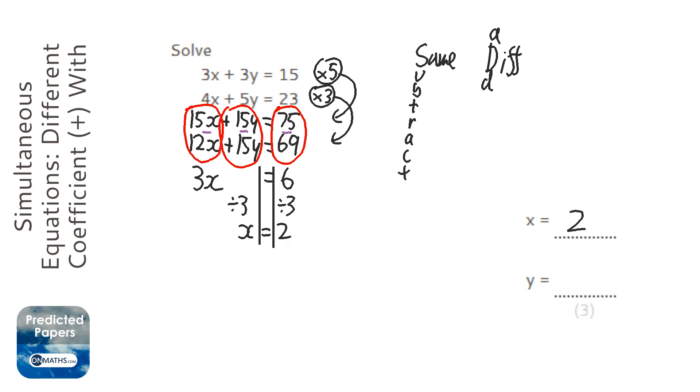But we're only half done because we need to find out what y is, so we just need to substitute that x equals 2 into one of the equations. I always pick the top one, but it would work just as well with the bottom one.